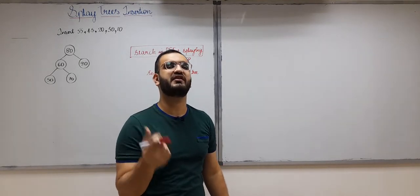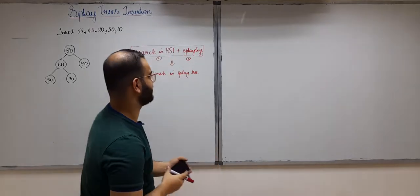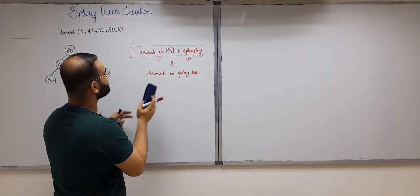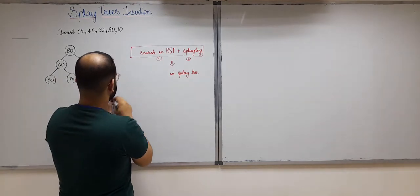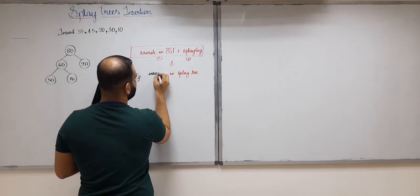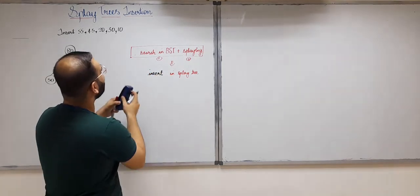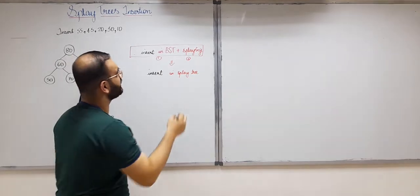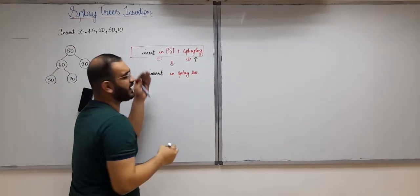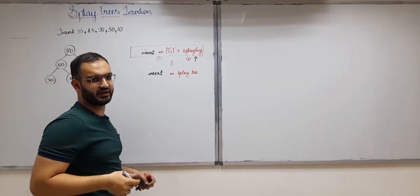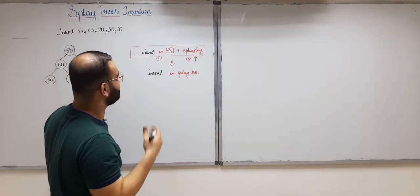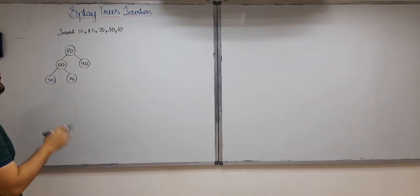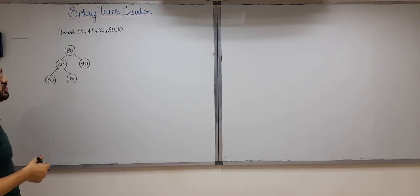For insert operation in a splay tree we perform the same process: insertion is done the same way as in a normal binary search tree, plus we perform splaying on the node that was inserted. Let us directly come to an example so you can better understand how we perform the insert operation in splay trees.